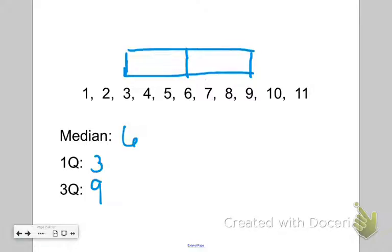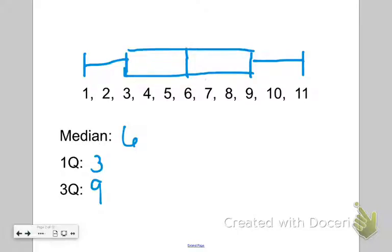Now, if I want to make a box plot, I'm also going to need whiskers, because a box plot is also known as a box and whisker plot. My whiskers are simply my minimum and maximum data values — that means 1 and 11. 1 is the minimum, 11 is the maximum. All I'm going to do is draw lines connecting my box to my minimum and maximum.